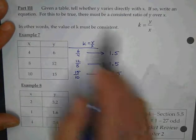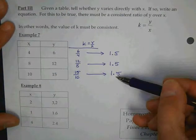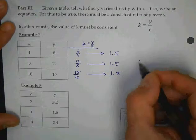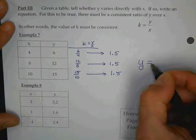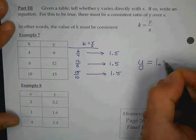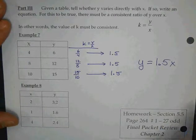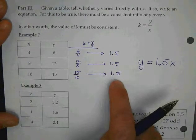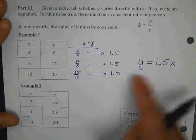So the question says, tell whether it varies directly with x. Is it consistent? So what's the equation? y equals, what's k? 1.5x. Okay. So you have to make sure it's consistent on all three, or all four, or all five, or however many they give you. And if it is, then you can write the equation.